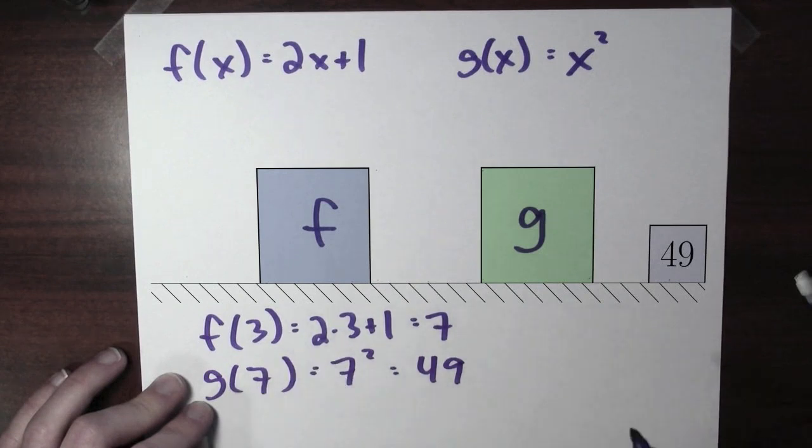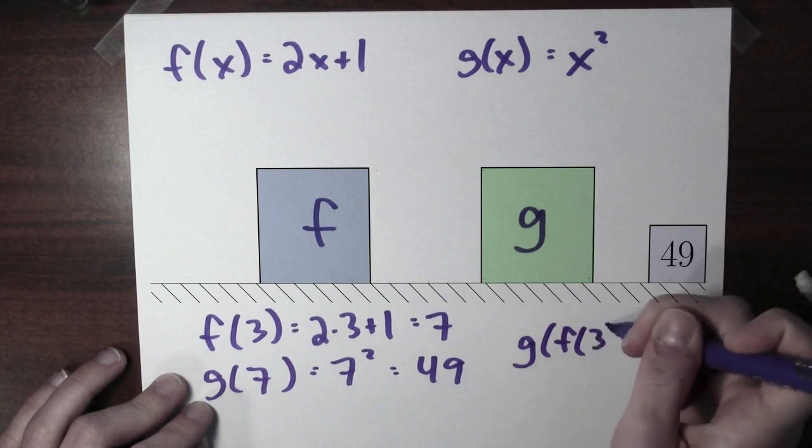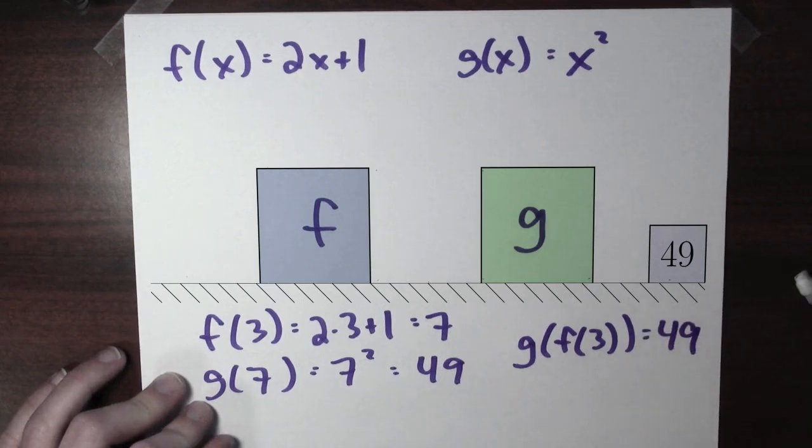And I could have written this in a little bit of a shorthand way. I could have just written g of f of 3, right? f of 3 is 7, and g of 7 is 49.